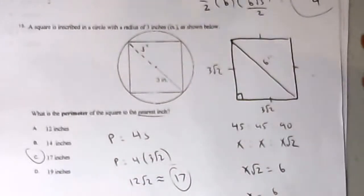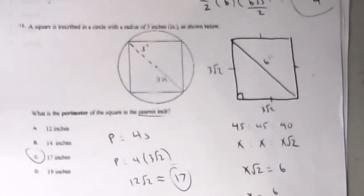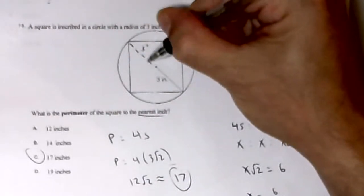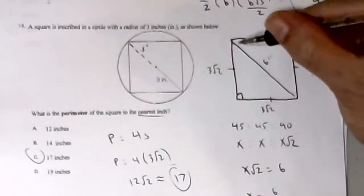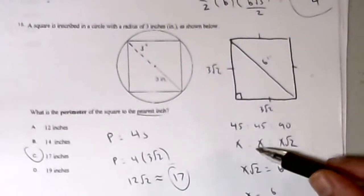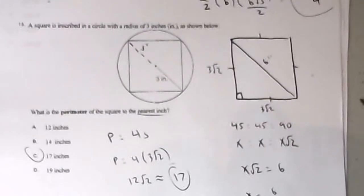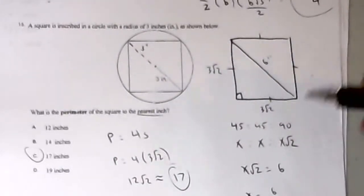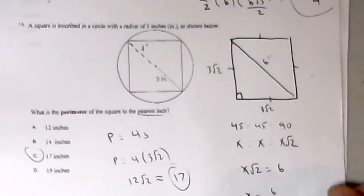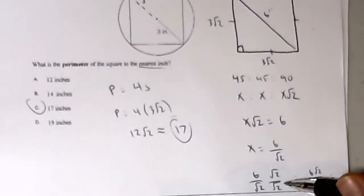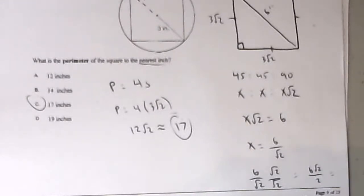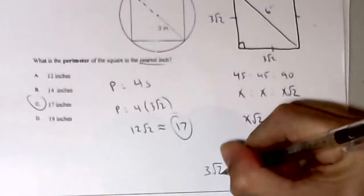A square inscribed in a circle with radius 3 inches is shown. What is the perimeter of the square to the nearest inch? If the radius is 3, the diameter is 6, which is also the diagonal of the square. This forms a 45-45-90 right triangle with side ratios x, x, x√2. So x√2 equals 6, meaning x equals 6 over √2. Multiply by √2 over √2 to rationalize: that gives 6√2 over 2, which equals 3√2.